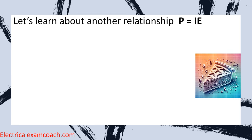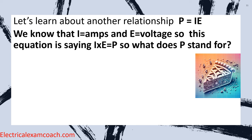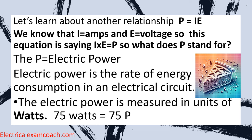Now let's learn about another relationship called PIE. In this equation, I stands for amps, E stands for voltage, and I times E equals P. The P stands for electric power — the rate of energy consumption in an electrical circuit, measured in watts. A 75-watt load equals 75P. Just like the Ohm's Law pyramid, as long as we know two of the three, we can always solve for the unknown.